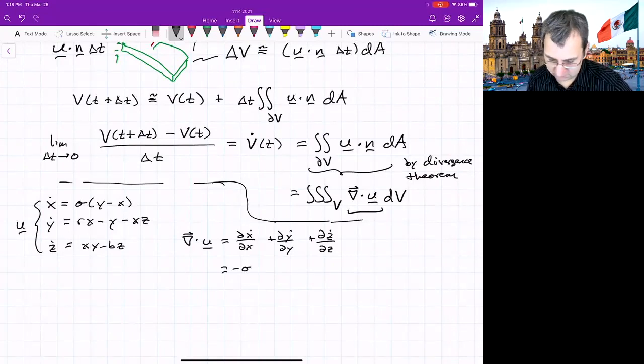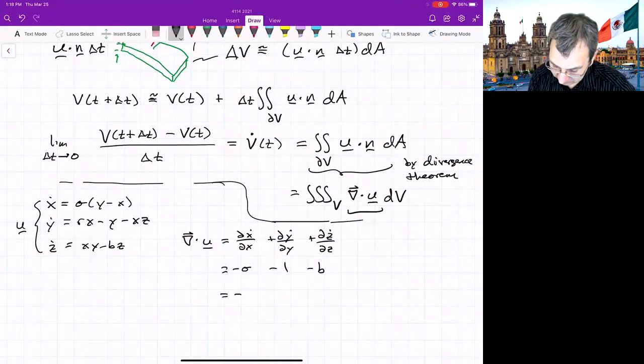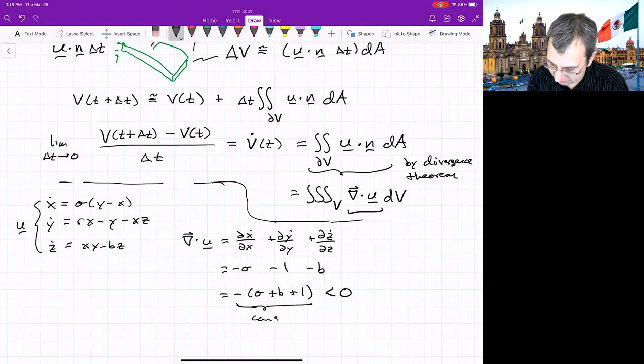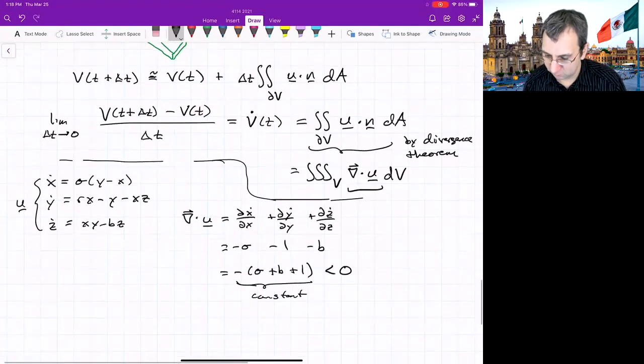What is partial x dot partial x? This is negative sigma. Okay. Partial y dot partial y negative 1. Partial z dot partial z minus b. So this is cool. It's sigma. I'll write it this way. Sigma plus b plus 1. Sigma and b are positive. So negative of all that is less than 0. So it's interesting that it's constant, right? We have the divergence is negative and constant, which means what?